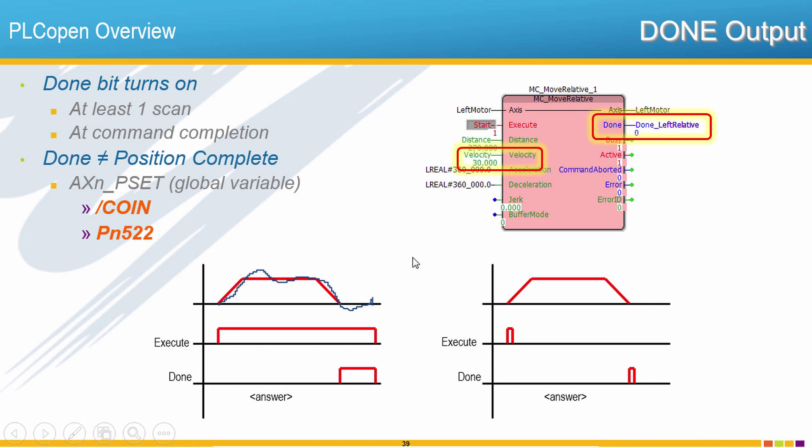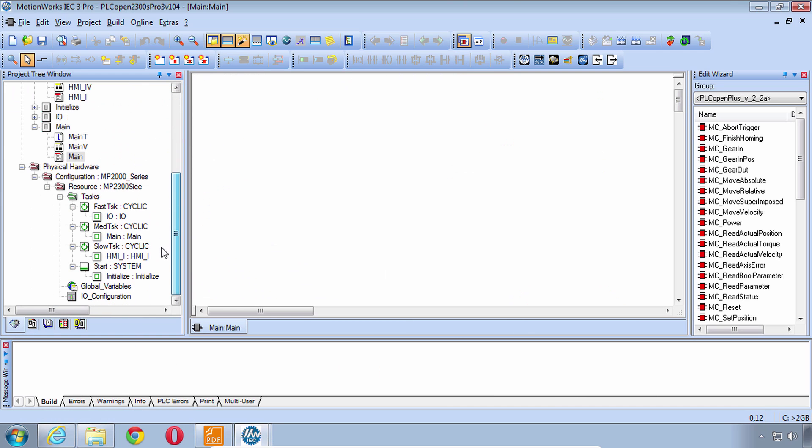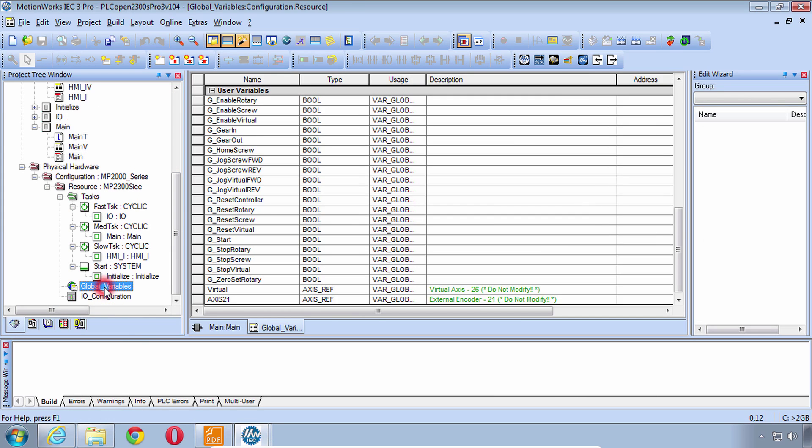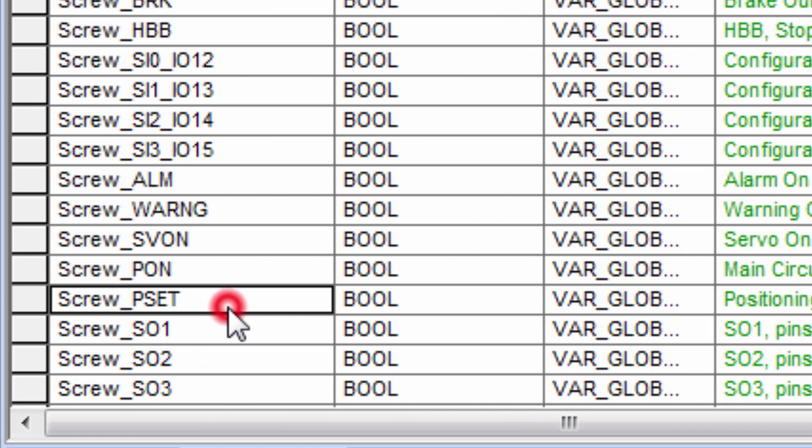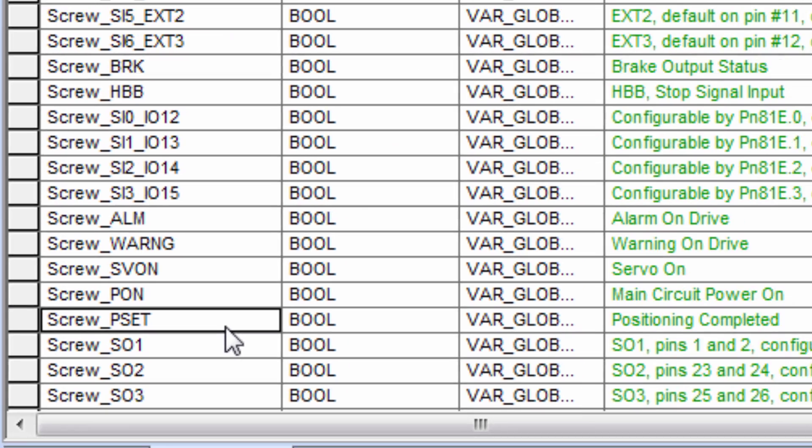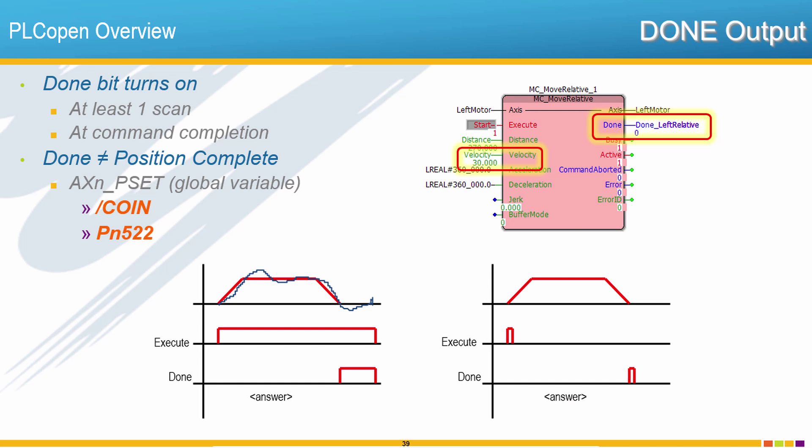So done does not equal what we would call position complete. Back in MotionWorks IEC here position complete can be seen in the global variables list for a particular axis as the PSET variable. This variable has a hardware address and is reported back from the servo into your code. For those of you who may be familiar with Yaskawa and the way we do our servos, that's the exact same signal as what we call the COIN, the position coincidence signal, and the level for that signal is adjusted with the parameter PN522.